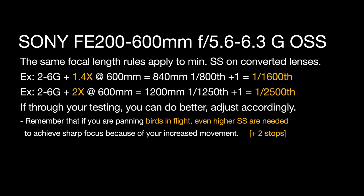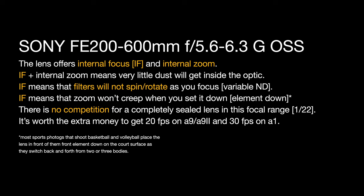So if through your testing you can do better, you can adjust accordingly, but these are good rules of thumb to use. Remember that if you're panning birds in flight, either handheld or on a tripod, even higher shutter speeds are needed to achieve sharp focus because of your increased movement as you pan. As a rule of thumb, I would do two stops above your focal length as a starting point to test. This lens offers internal focus and internal zoom, which is unique for all other lenses that can attach to a Sony body at this time.